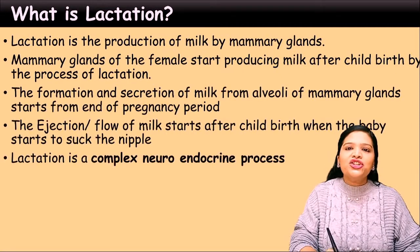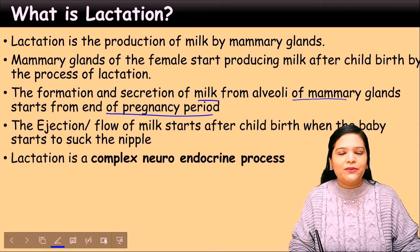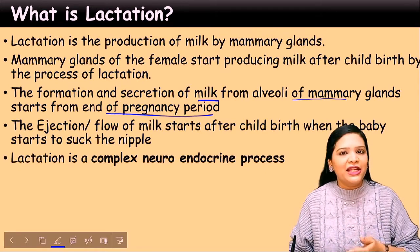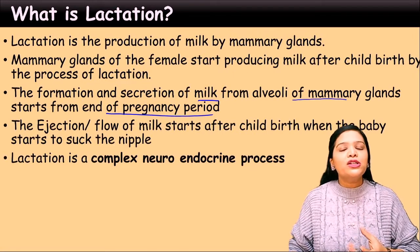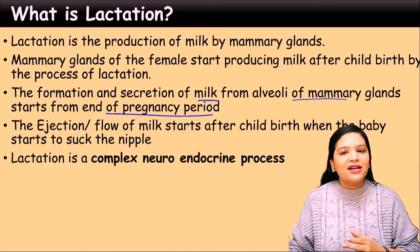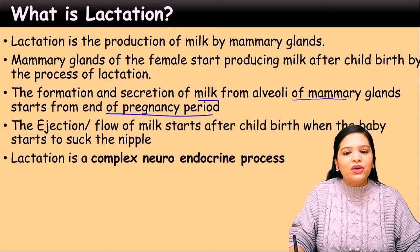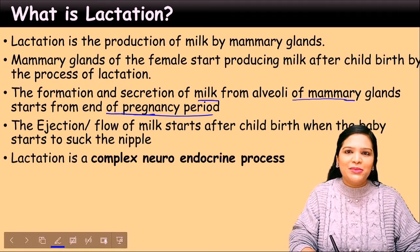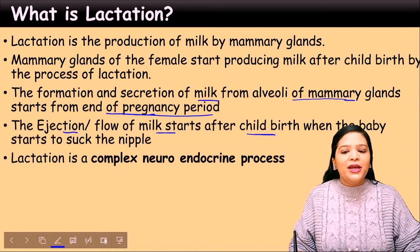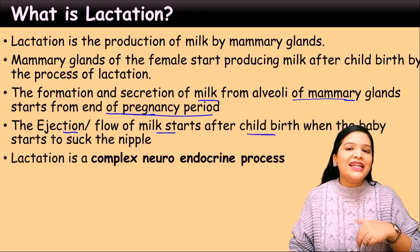The formation and secretion of milk from the alveoli of the mammary gland starts from the end of the pregnancy period itself. The ejection of the milk occurs after parturition, that means after the baby is delivered. But the process of preparing the alveolar cells of the mammary glands to produce milk occurs during the pregnancy stage. The ejection or flow of milk starts after childbirth only, because the baby has to suck the nipple and there is a let-down reflex involved.